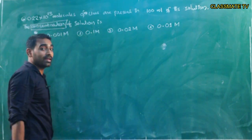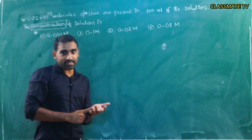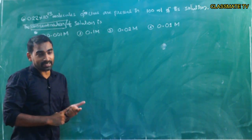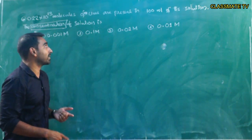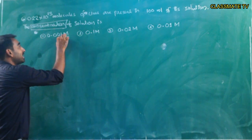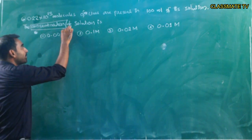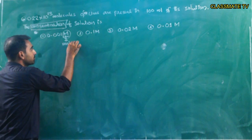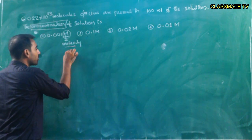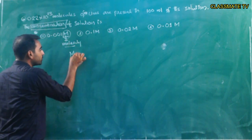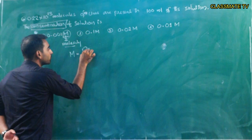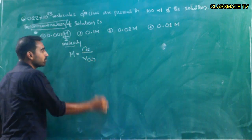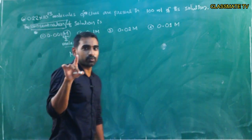The question asks for concentration. Concentration can be expressed in many units — molarity, normality — but here the options are in molarity, and capital M indicates molarity. Molarity is equal to the number of moles of solute present per volume of solution in liters.